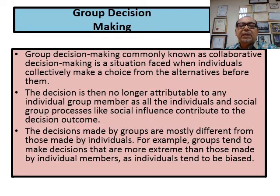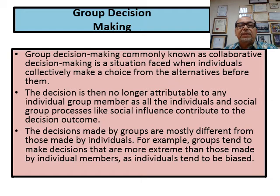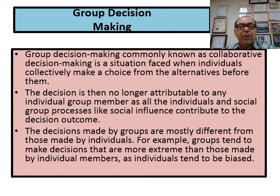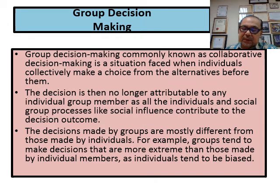In a large group, decisions are made collectively with big numbers so no one is afraid of being blamed if the objective is not achieved. Because of this, a group can make more extreme decisions and take bigger risks — if it fails, it does not personally affect any one individual.